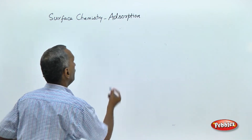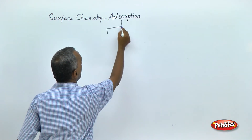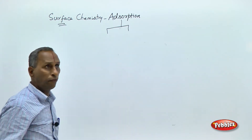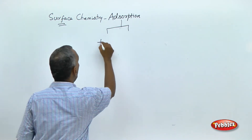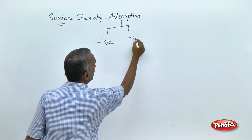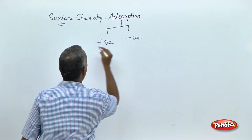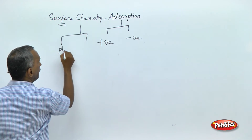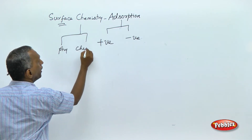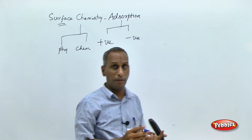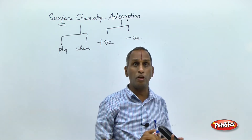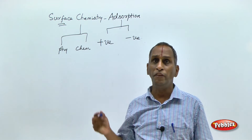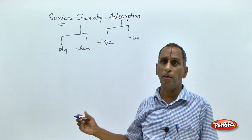Adsorption is the phenomenon of higher concentration at the surface. Adsorption is of two types: positive adsorption and negative adsorption. Another classification is physical adsorption and chemical adsorption.